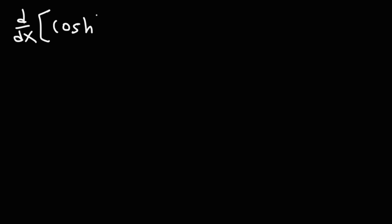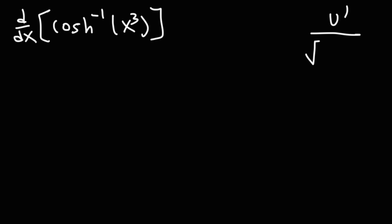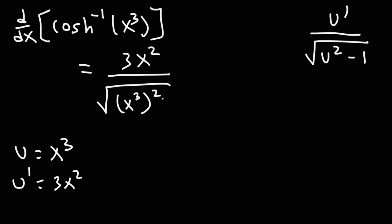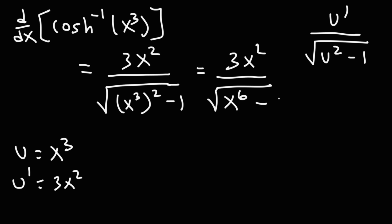Let's try another example: find the derivative of the inverse hyperbolic cosine function of x cubed. Using the formula, it's u prime over the square root of u squared minus 1. In this problem, u equals x cubed, and u prime, the derivative of x cubed, is 3x squared. Plugging into the formula: 3x squared divided by the square root of x cubed squared minus 1. Since 3 times 2 is 6, that gives us 3x squared over the square root of x to the 6th minus 1.